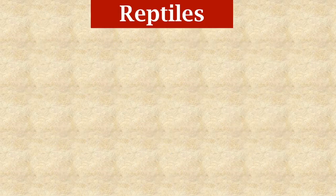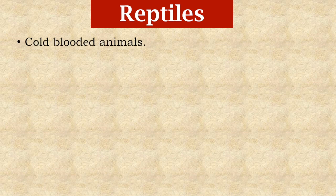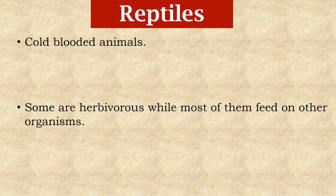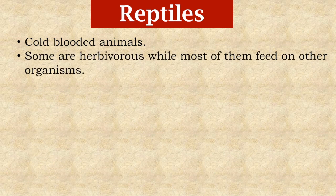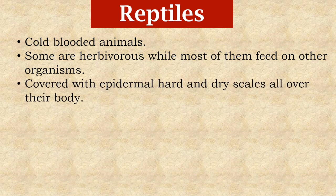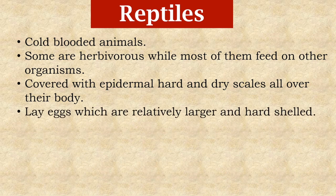The next group of vertebrates is reptiles. Reptiles are cold-blooded animals. Some reptiles are herbivores while most of them feed on other organisms. Reptiles are covered with epidermal hard and dry scales all over their body. They lay eggs which are relatively large in size and hard-shelled.